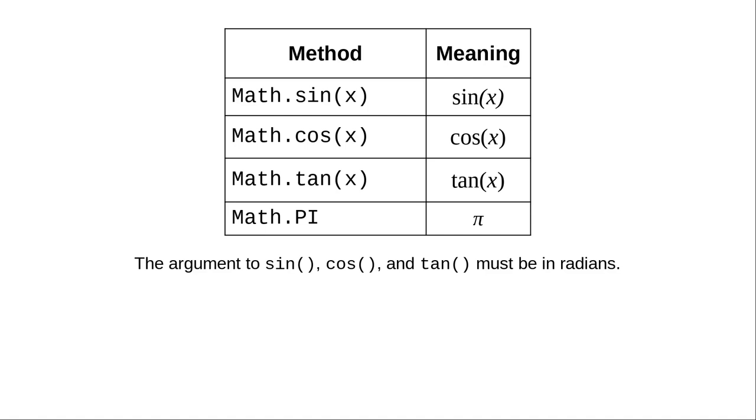Here are some of the trigonometric methods, plus the constant pi. These methods take their argument in radians, not in degrees.